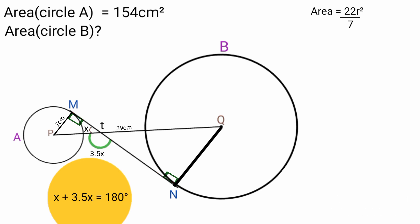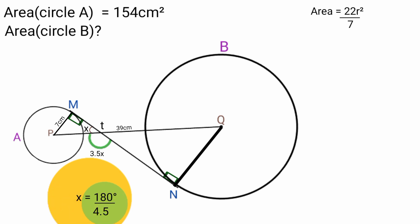X plus 3.5X is 4.5X, so 4.5X equals 180 degrees. To find the exact value of X we divide both sides by 4.5. 180 degrees divided by 4.5 is 40 degrees, so X equals 40 degrees.